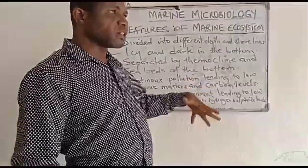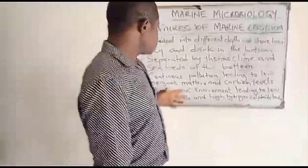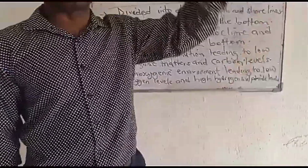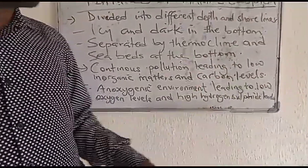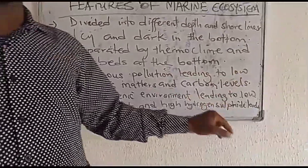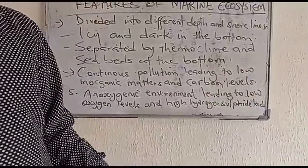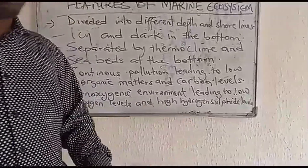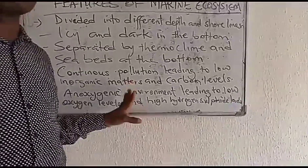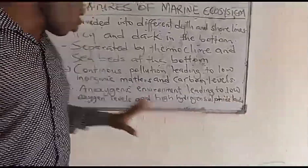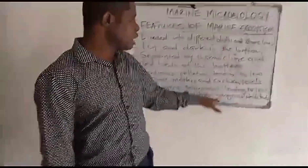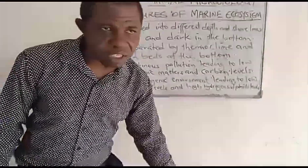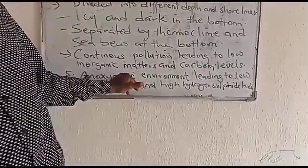Because it is a high reservoir of water, there is continuous pollution from rivers, tributaries, and channels, leading to low inorganic matter and carbon levels. The marine environment also has a low oxygen level — it is an anoxic water environment — while hydrogen sulfide levels are high and keep increasing as oxygen levels keep depleting.